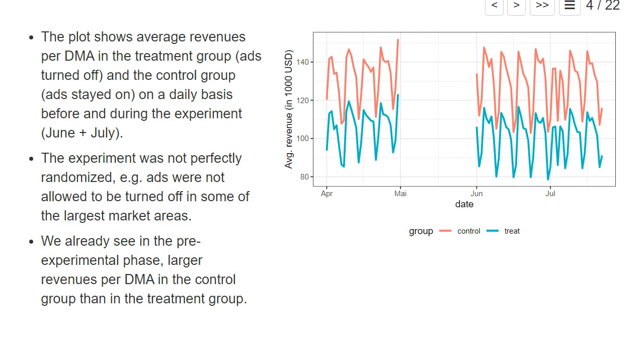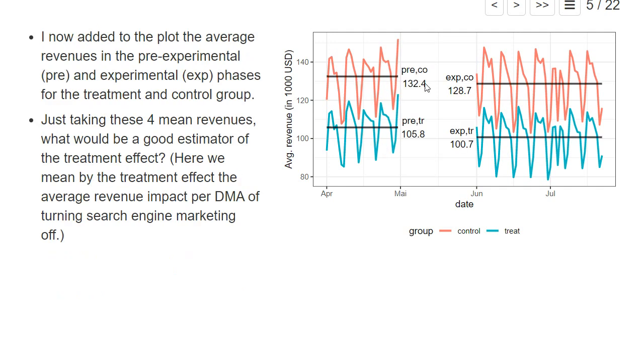Here I have added with black lines and also with numbers the average revenue in the different periods and for the different groups. For example, in the period before the experiment, the pre-experimental period, the average DMA in the control group had 132,000 US dollars in revenues, while the average DMA in the treatment group before the experiment had 105,800 average US dollars. And we also have the two numbers during the experimental period.